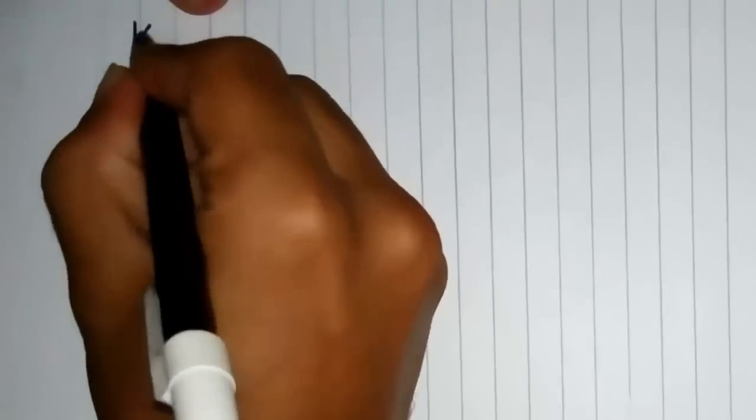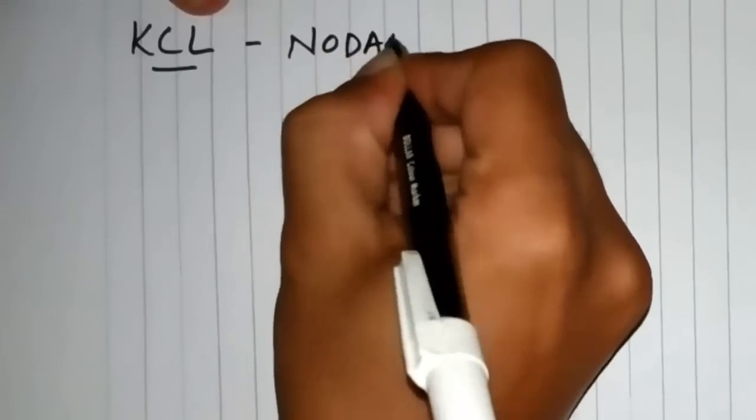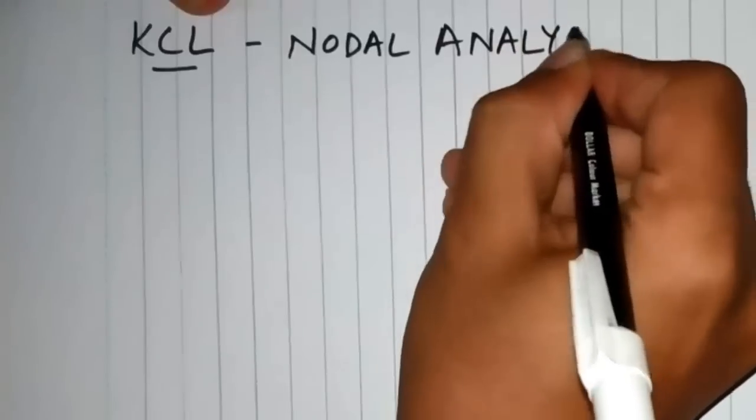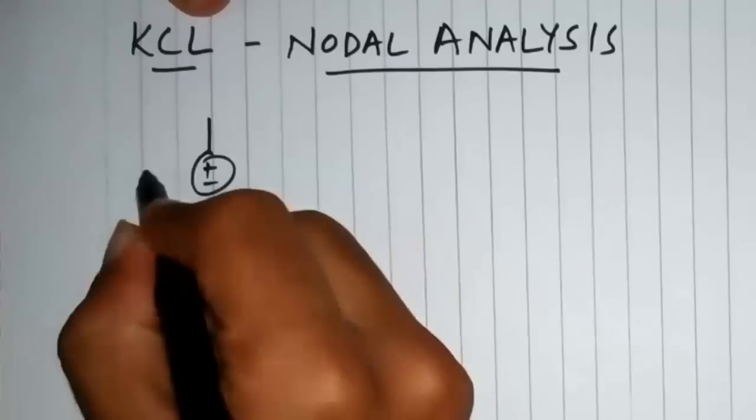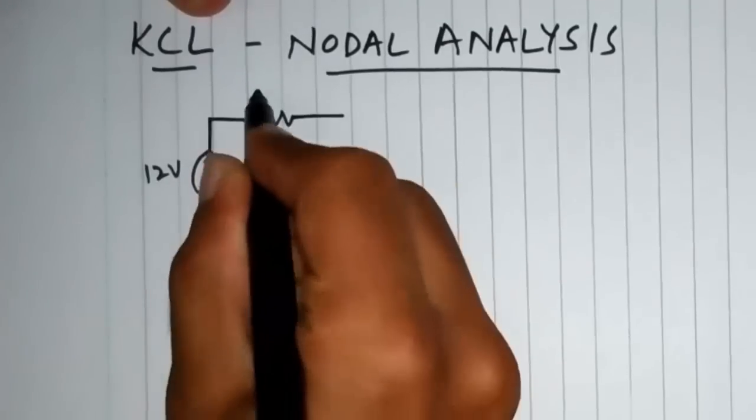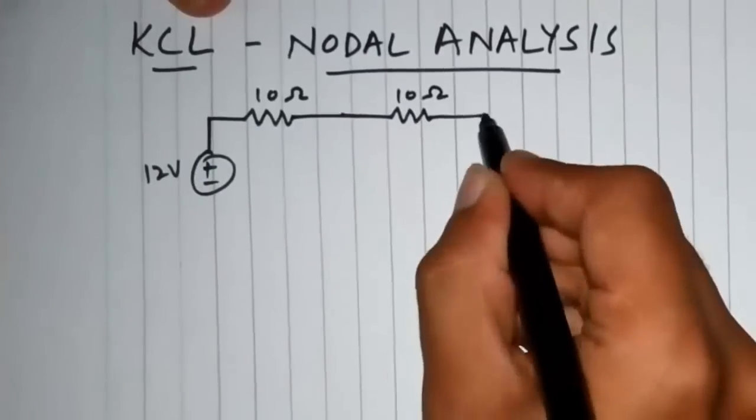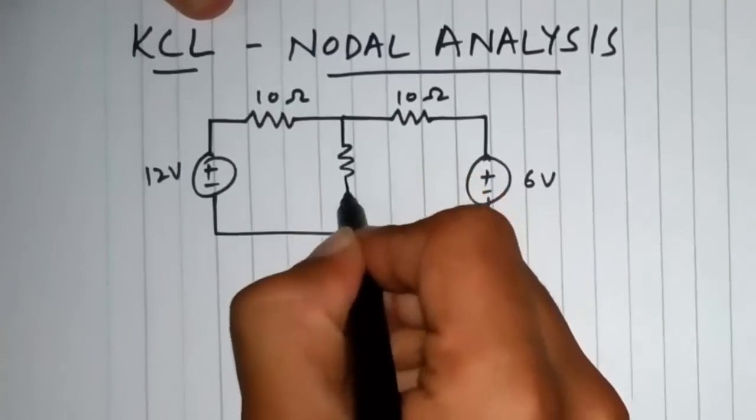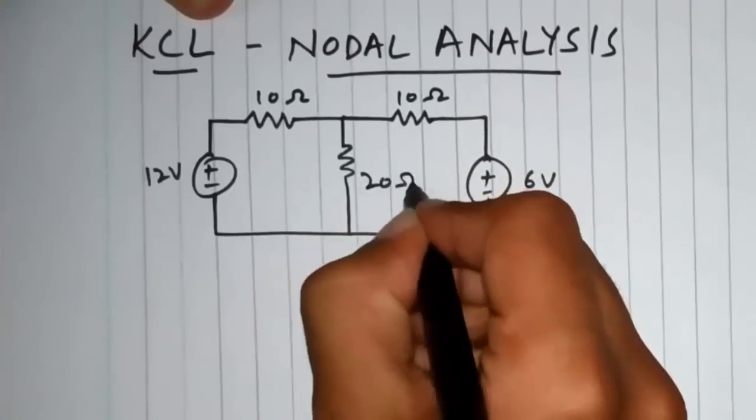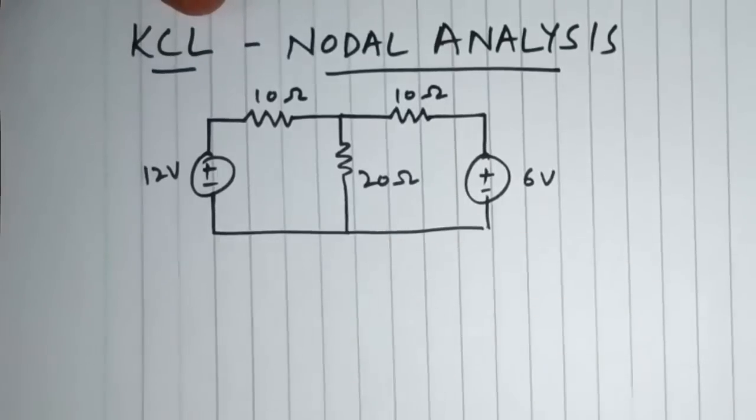Today we are going to solve a circuit using Kirchhoff's Current Law or nodal analysis. Let's take a simple circuit with two voltage sources: 12 volts here, a resistor of 10 ohms, another resistor of 10 ohms, a 6 volt voltage source over here, and a 20 ohm resistor over here. The first step in solving any circuit is to take a reference ground or datum node.